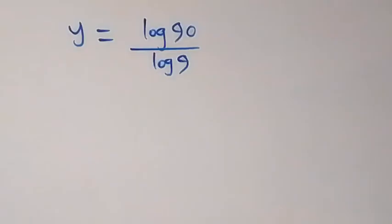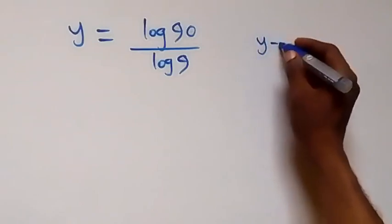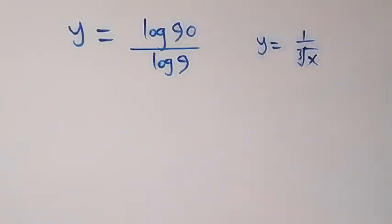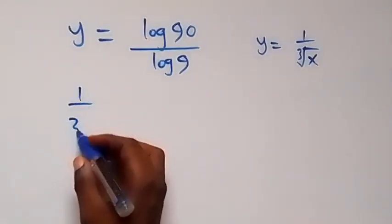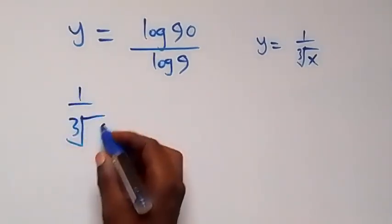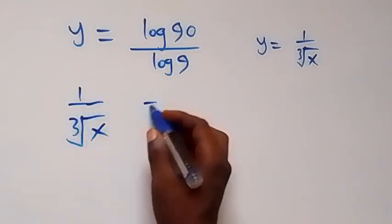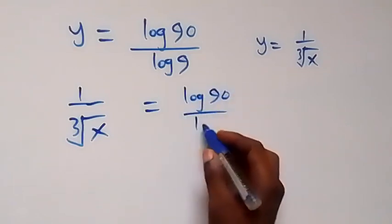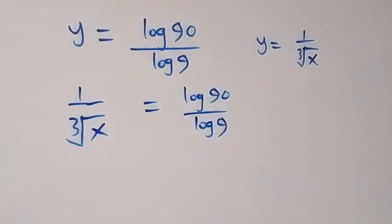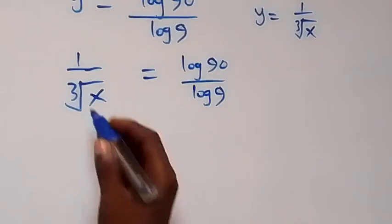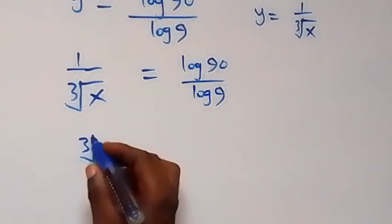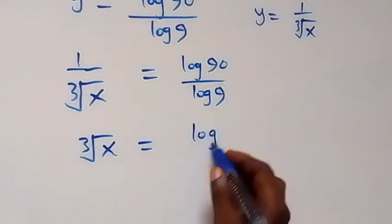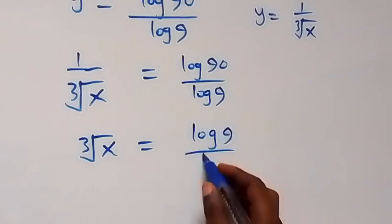Then we have y equals log 90 over log 9, which by change of base is log base 9 of 90. We recall that y is the same as 1 over the k-th root of x. So 1 over the k-th root of x equals log 90 over log 9. Taking the reciprocal on both sides, the k-th root of x equals log 9 over log 90.